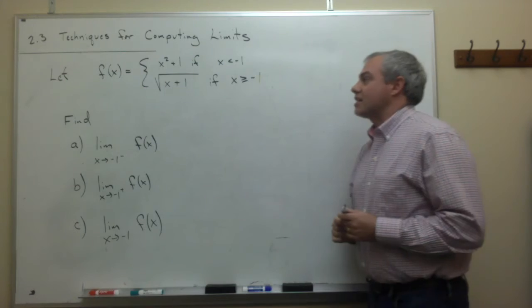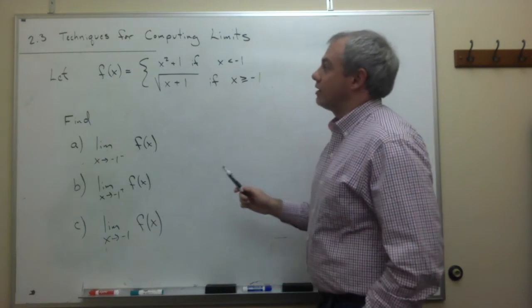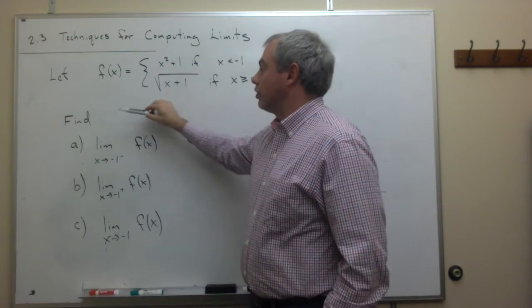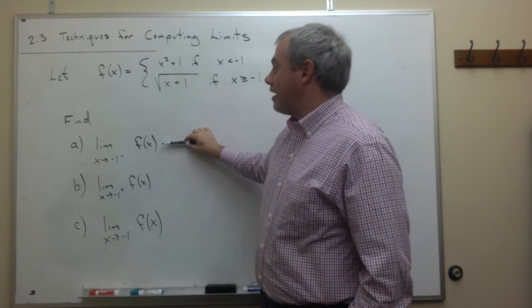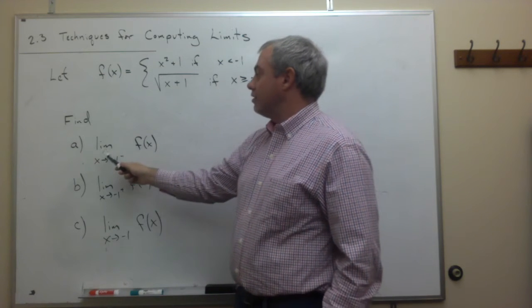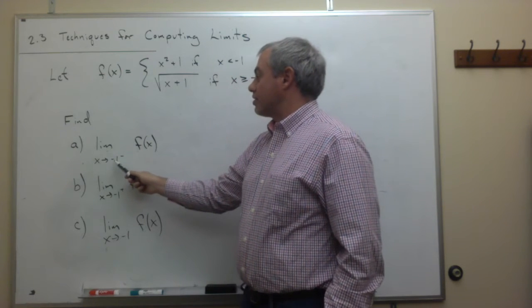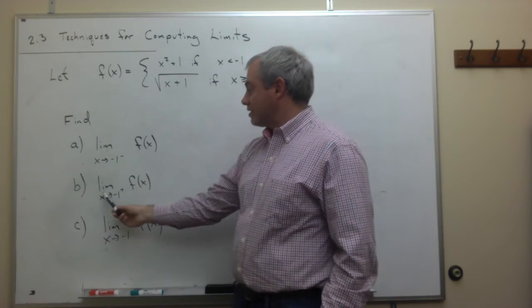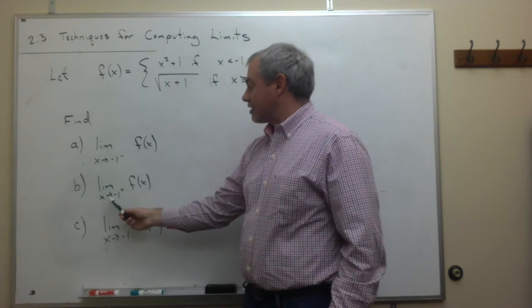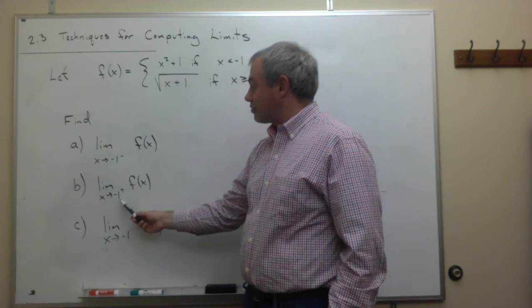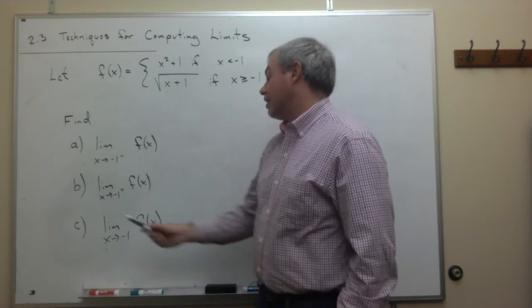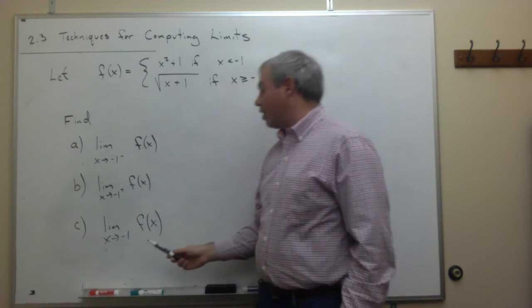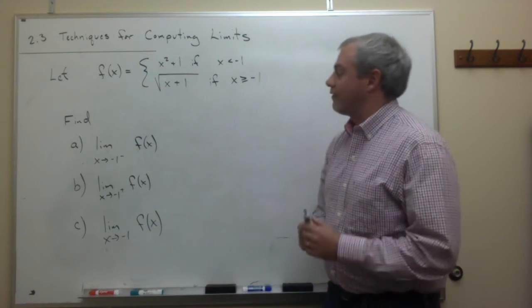The problem is asking us to find three different things. Part a: the limit as x goes to minus 1 from the left of f(x). Part b: the limit as x goes to minus 1 from the right of f(x). And part c: the limit as x goes to minus 1 of f(x).